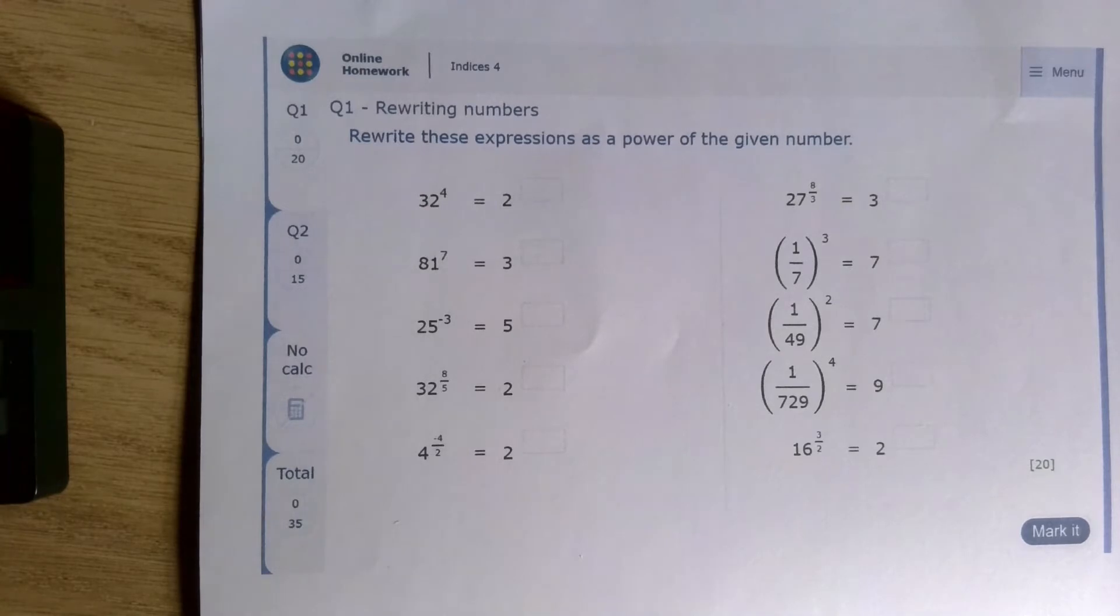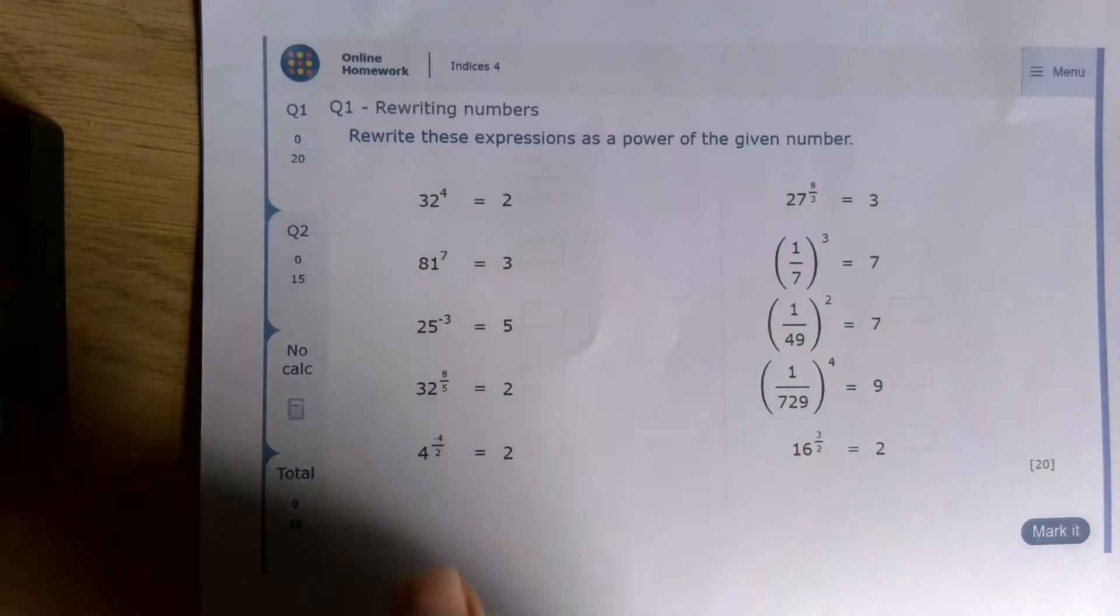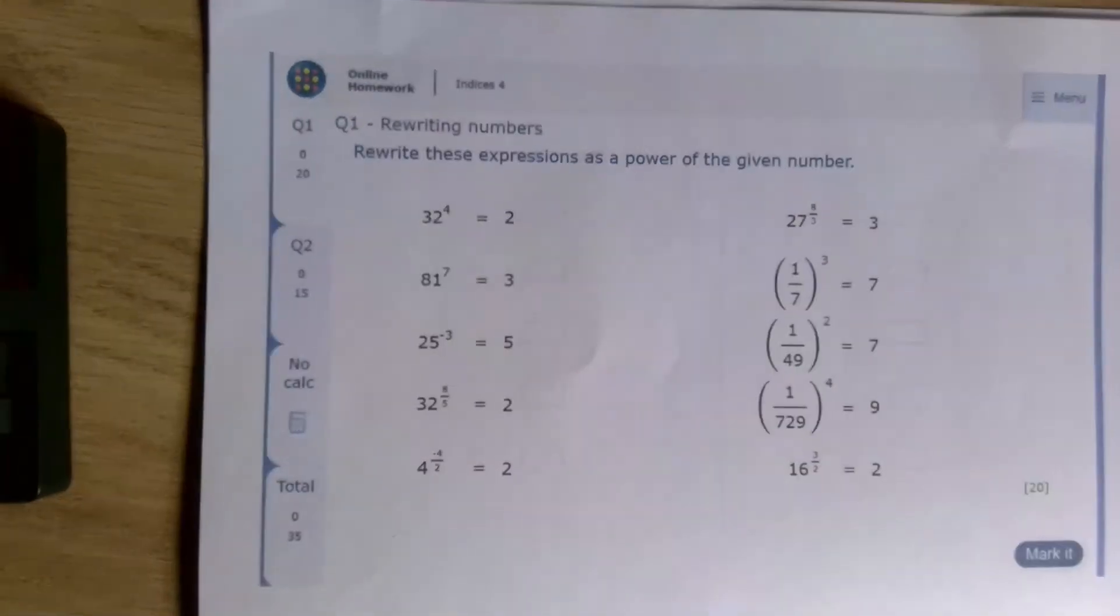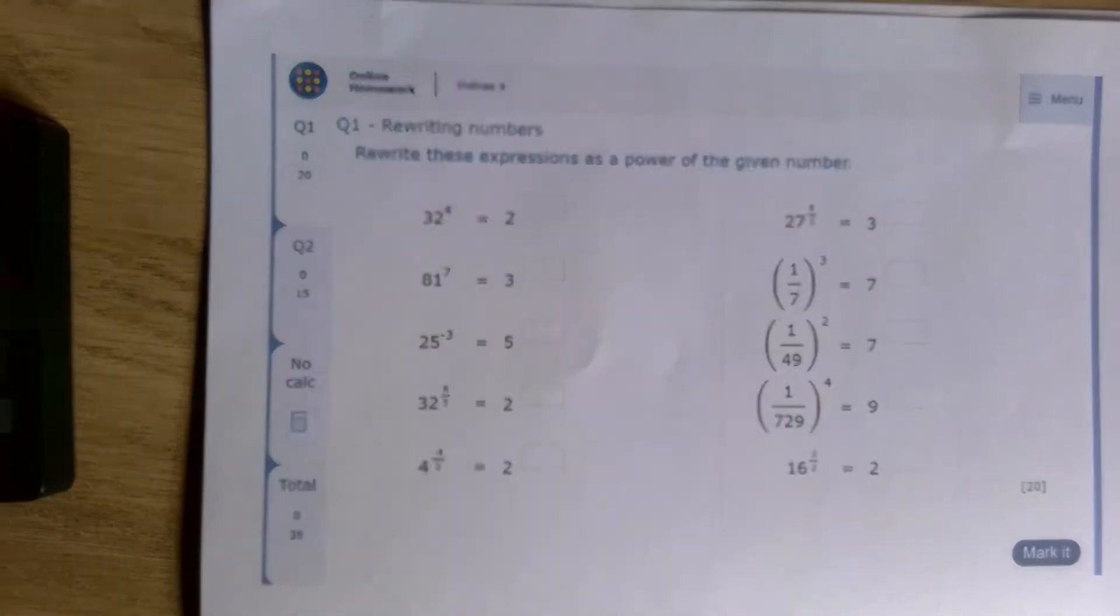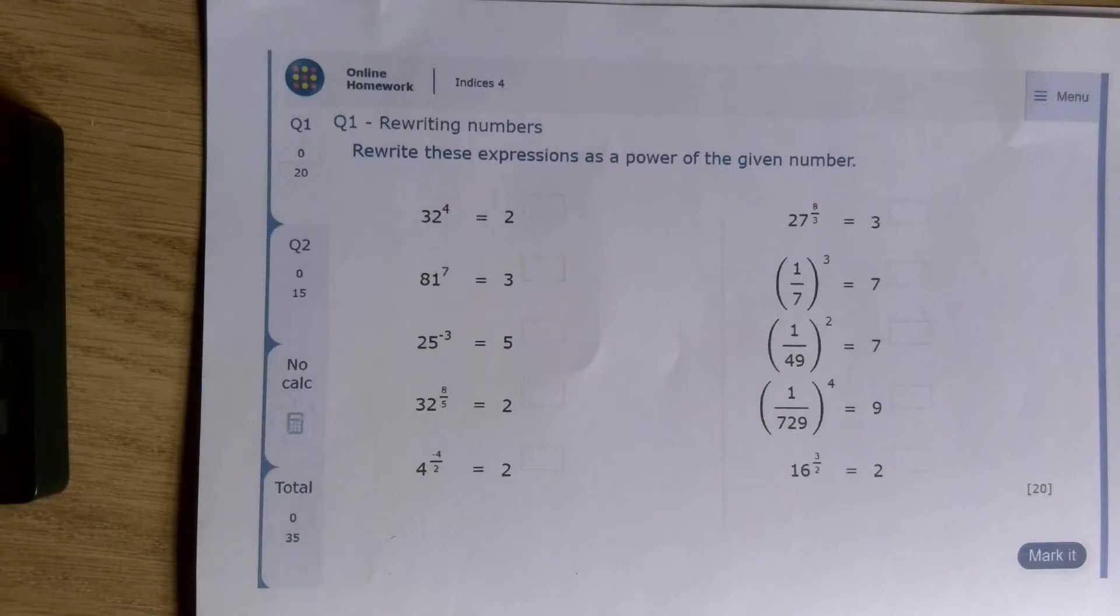So 32 times 32 times 32 times 32. When we have a negative power, such as here, this is a reciprocal power, which means it's 1 over the base to that power. So for example, x to the power of negative 5 would be 1 over x to the power of 5.